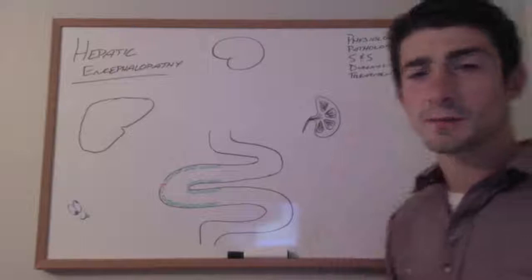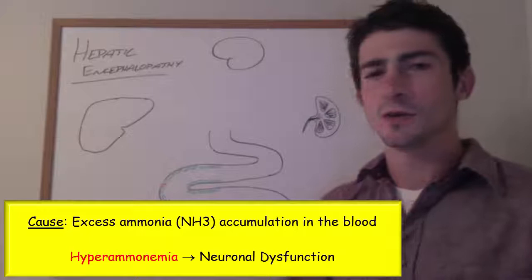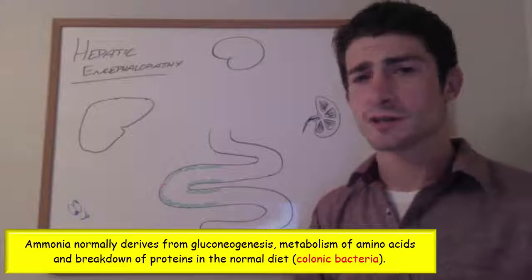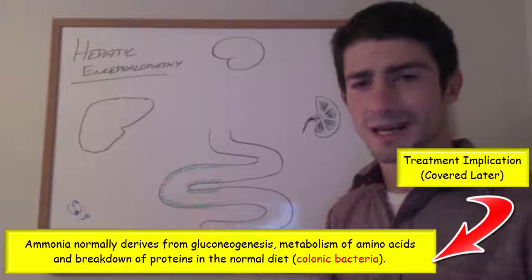Ultimately this is a problem with excess ammonia in the blood. For basic physiology, in a healthy individual we generate ammonia via gluconeogenesis, the breakdown of amino acids, as well as the colonic bacteria breaking down the protein in our diet.